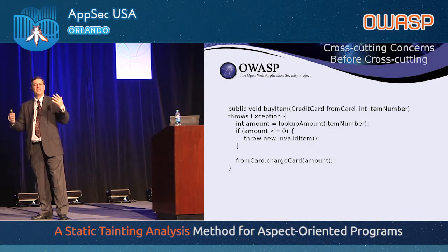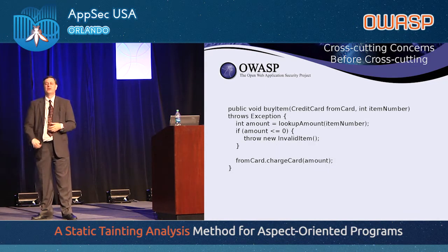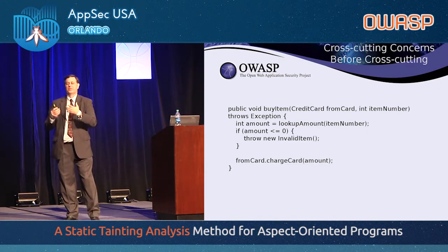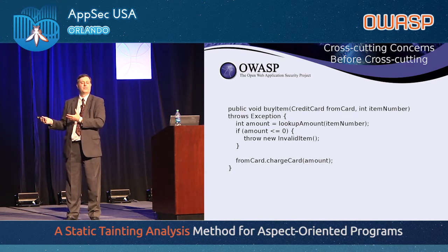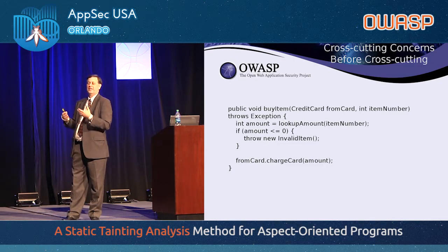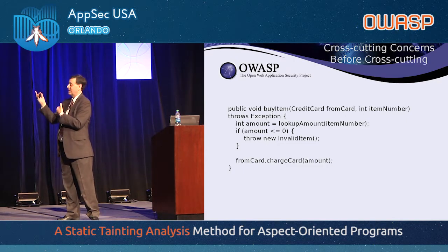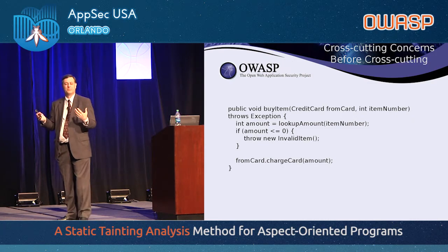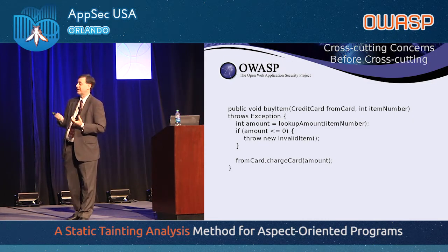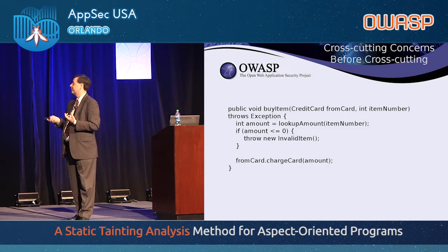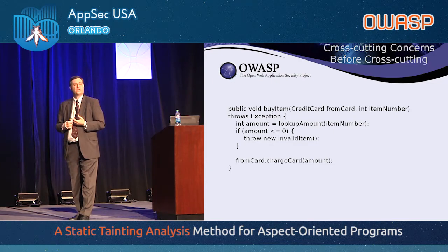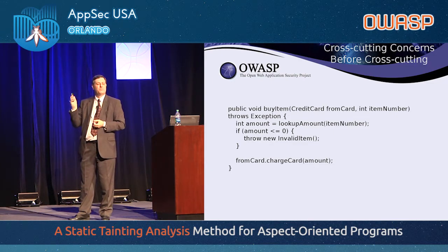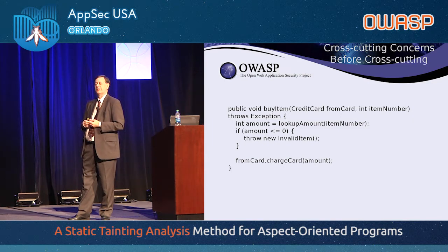Here we have a very small, simple little routine — just a buy-item function. It's going to look up the amount of the item, how much it costs. If the cost is less than or equal to zero, it's going to throw an exception because you shouldn't let somebody get something for free. Then it's going to charge the credit card. Very simple — that is before adding our cross-cutting concerns.